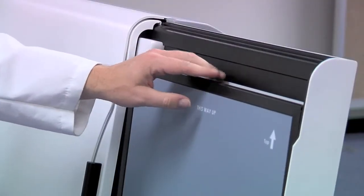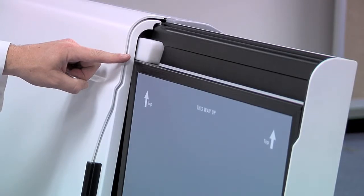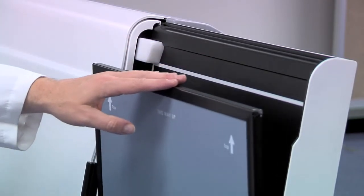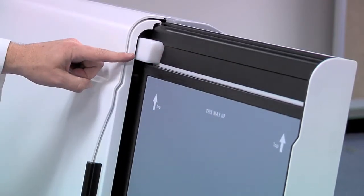If the cassette comes in contact with the loading block, it has been loaded incorrectly and must be reloaded. Slowly pull the top of the cassette towards the front of the CR until the cassette moves into place.